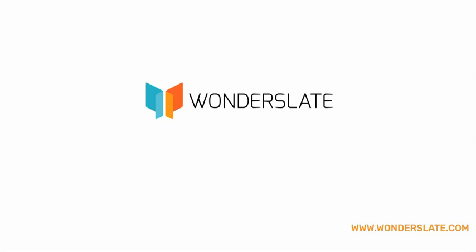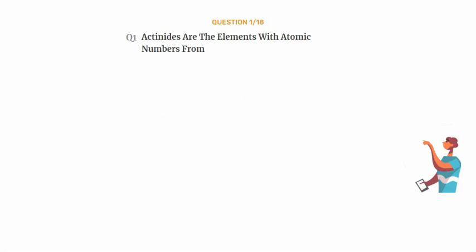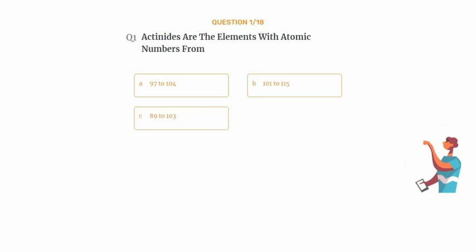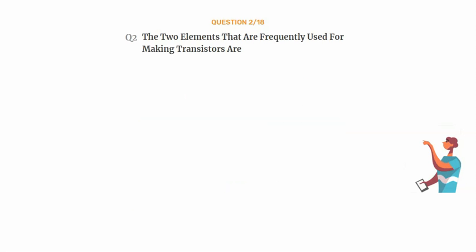Hello everyone, welcome to Wonder Slate. The topic for today's quiz is general science: elements and metals. Question number one: actinides are the elements with atomic numbers from — option A: 97 to 104, option B: 101 to 115, option C: 89 to 103, option D: 36 to 43. The correct answer is option C: 89 to 103. Actinoid elements, also called actinide elements, are a series of 15 consecutive chemical elements in the periodic table, from actinium to lawrencium, atomic numbers 89 to 103. As a group, they are significant largely because of their radioactivity.